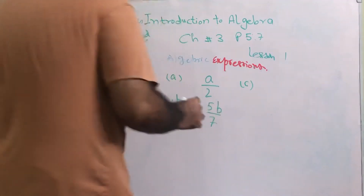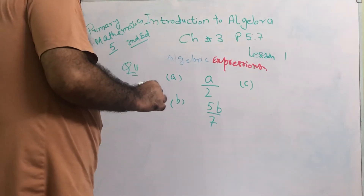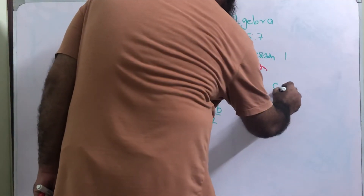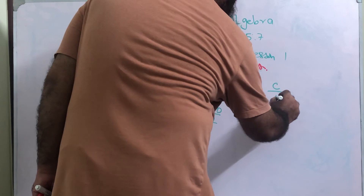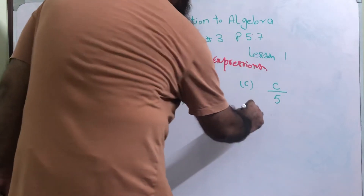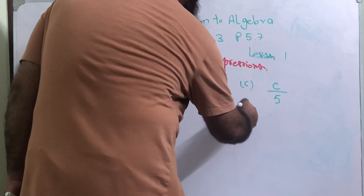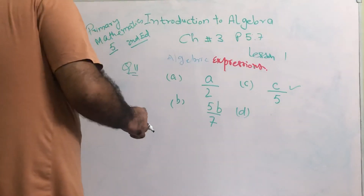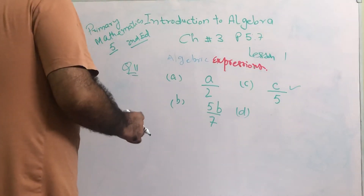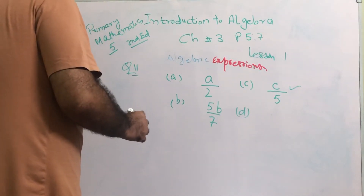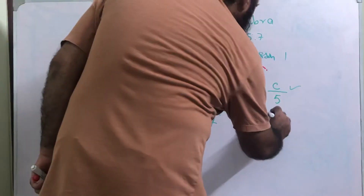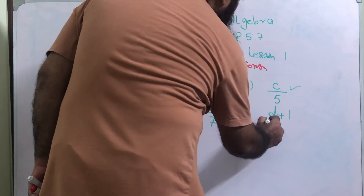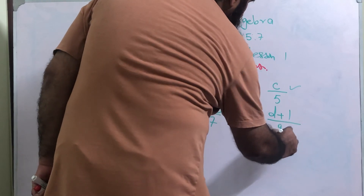Part c is: divide c into 5 equal groups. So c divided by 5 is the algebraic expression for part c. Part d is: divide d plus 1 into 9 equal groups. The expression is d plus 1 over 9.